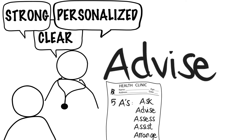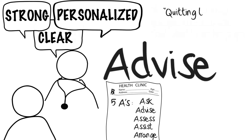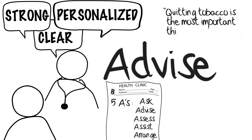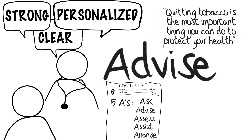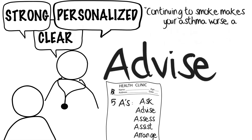For example: 'It is important that you quit tobacco use now, and I can help you.' And: 'Quitting tobacco is the most important thing you can do to protect your health.' You can personalize these messages by saying something like: 'Continuing to smoke makes your asthma worse, and quitting may dramatically improve your health.'